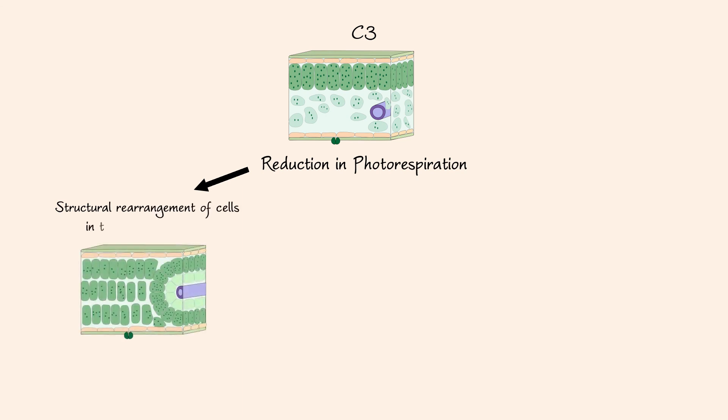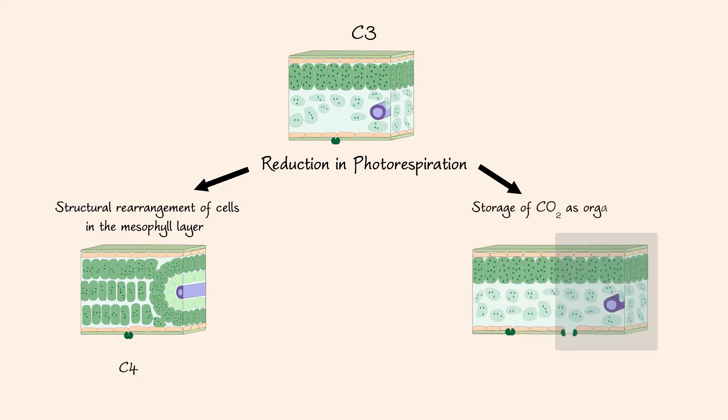In summary, a reduction in photorespiration can be achieved by two means: structural rearrangement of cells in the mesophyll layer, as seen in C4 plants, and storage of carbon dioxide as organic acids during the night, as seen in CAM plants.